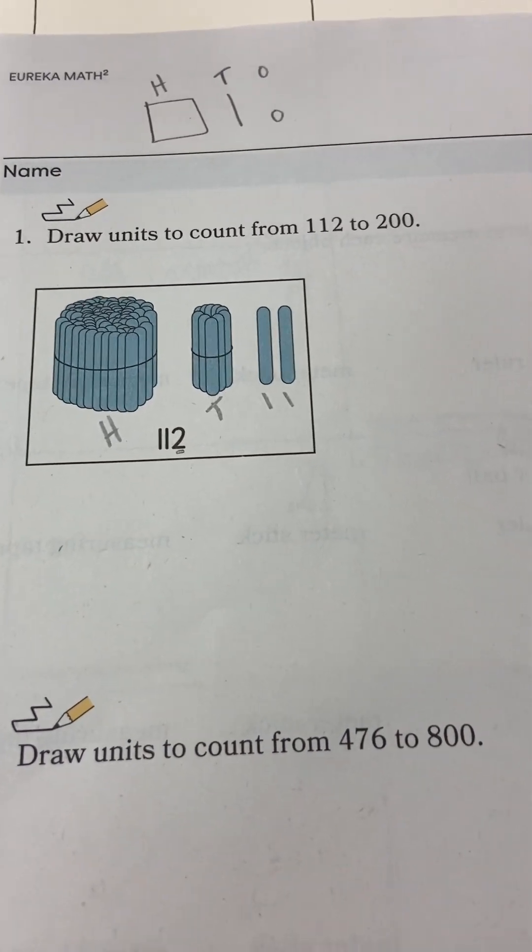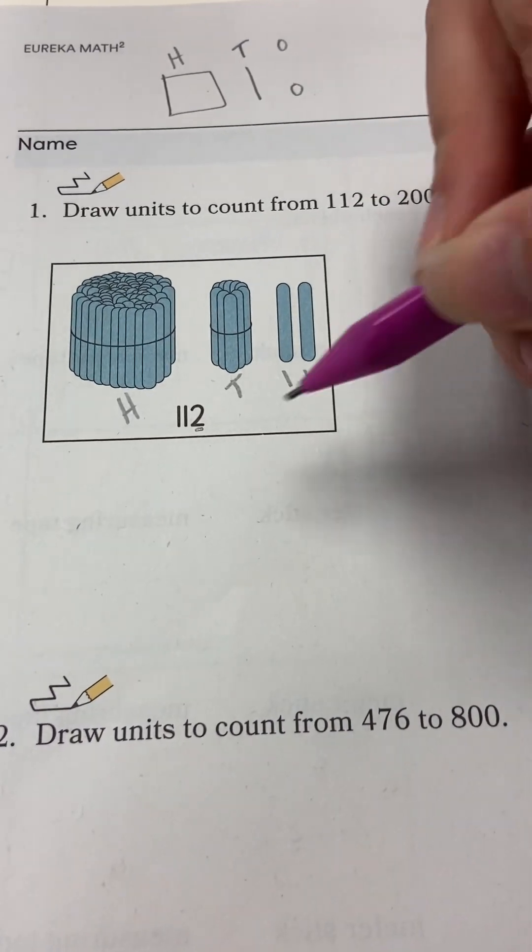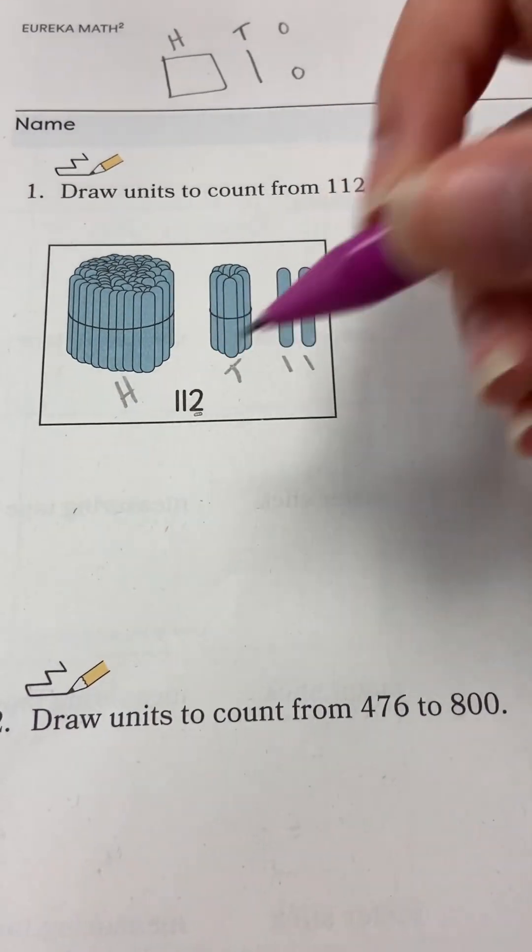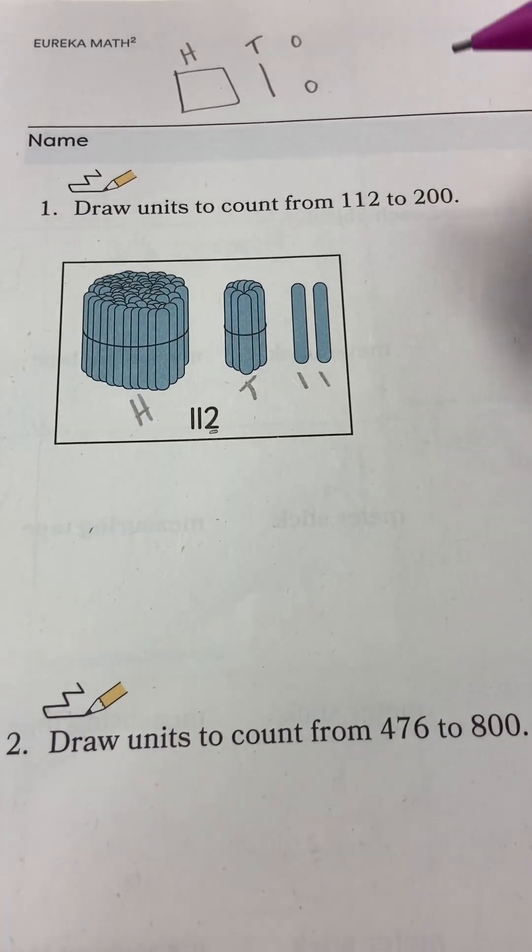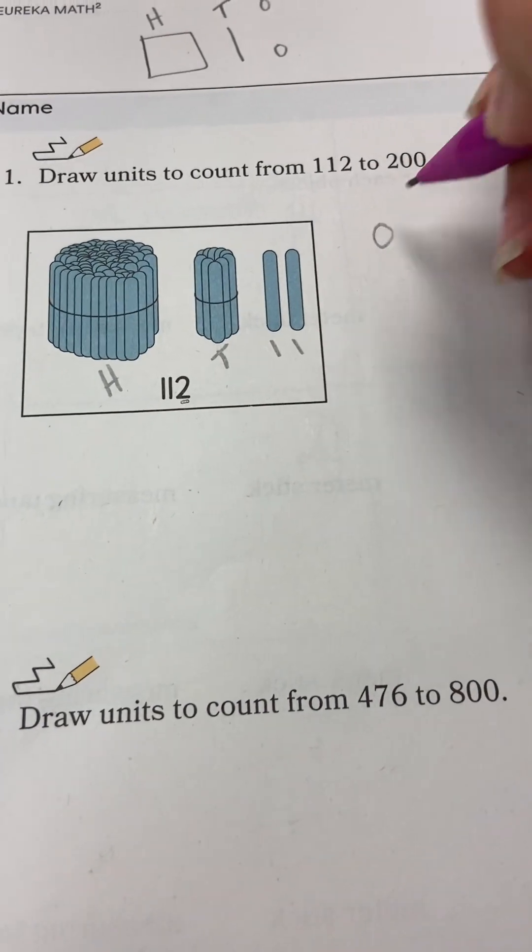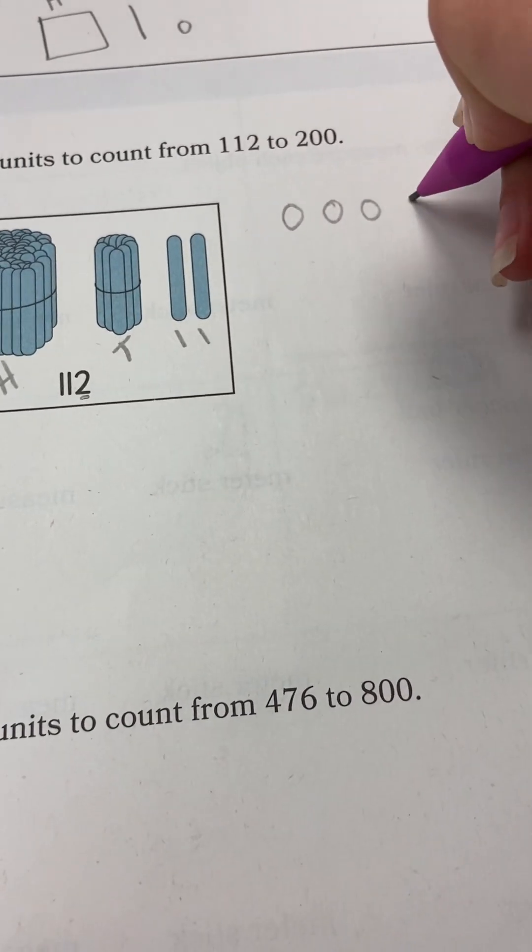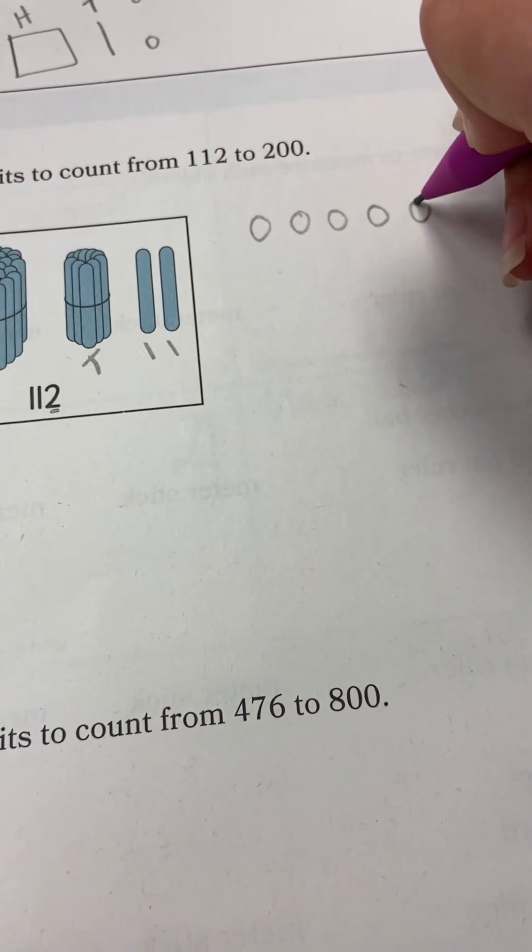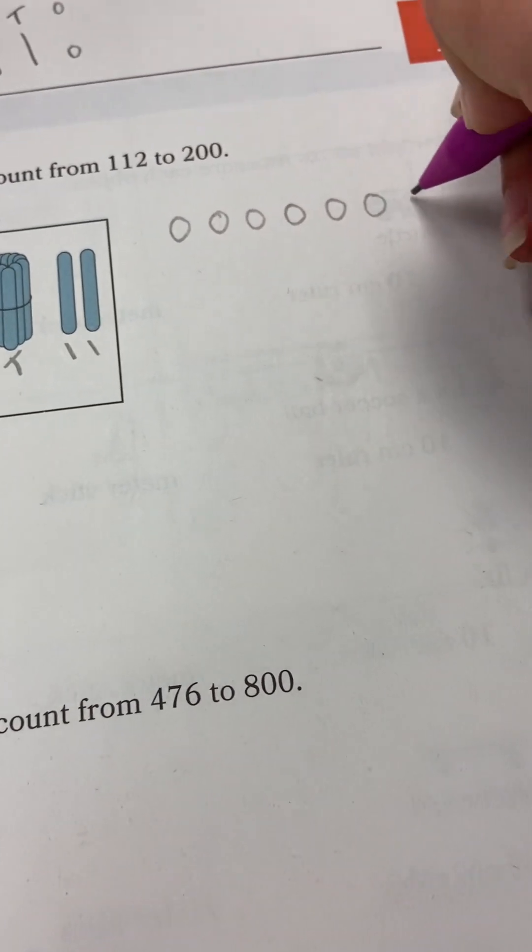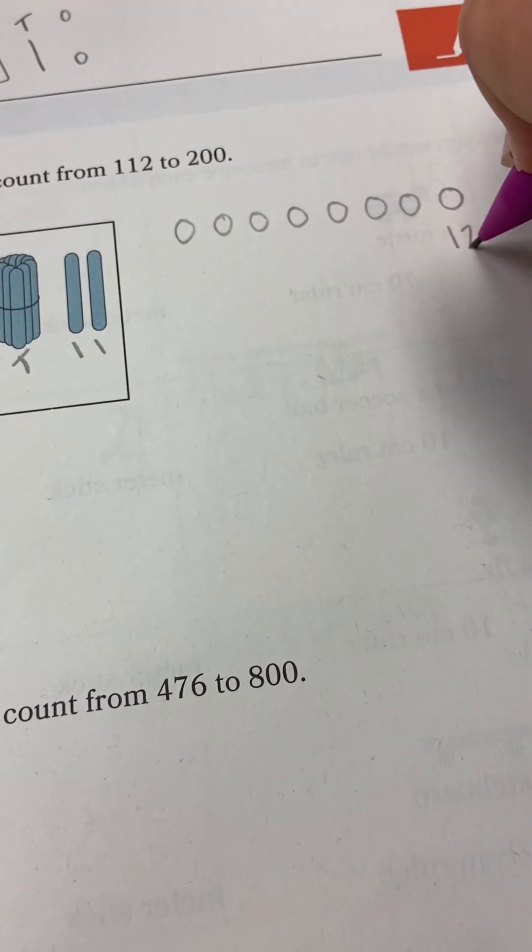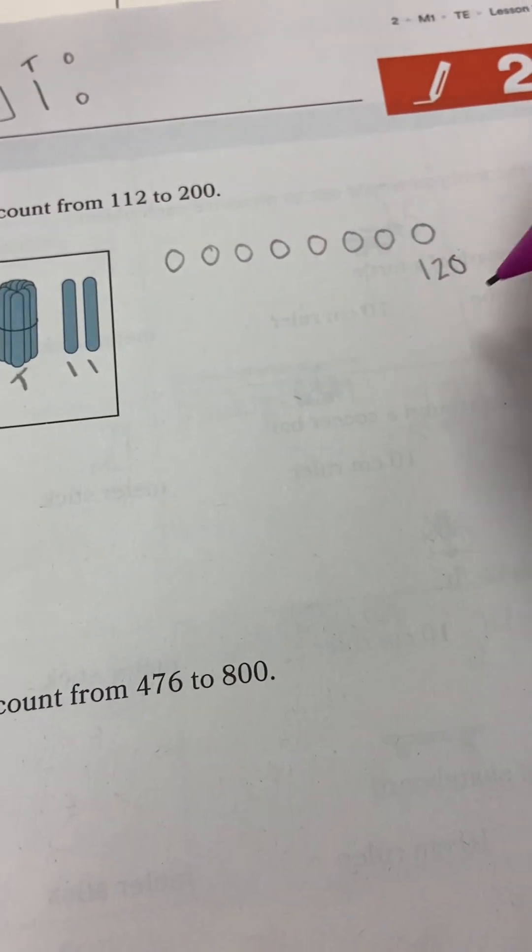So we want to get to 120. We are going to count by 1's to get to 120 from 112. So we say 112, 113, 114, 115, 116, 117, 118, 119, 120. And then I get them to label 120 when they get to 120.